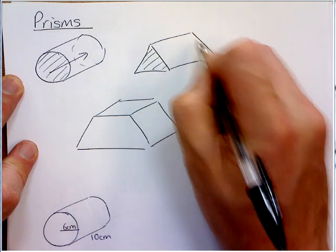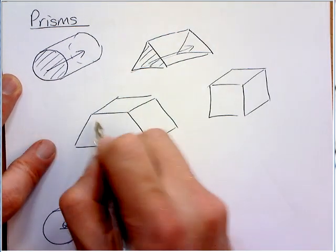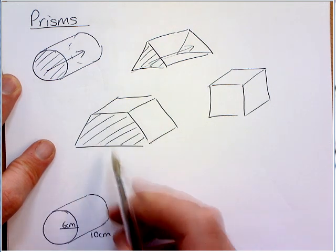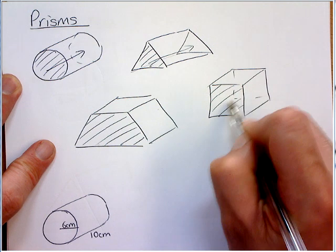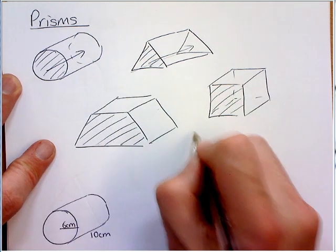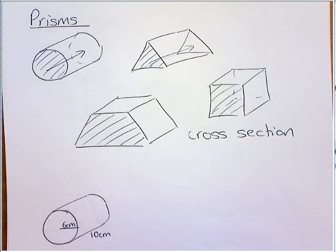Just like this one, it's exactly the same at the end. It goes all the way back. This trapezium is repeated all the way back. And this square here. So, we call these shaded sections a cross-section, or cross-sectional area.